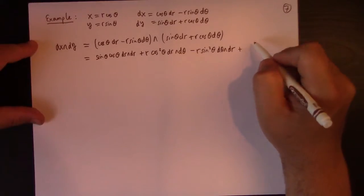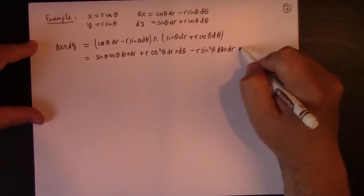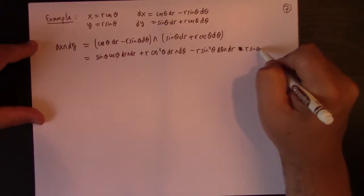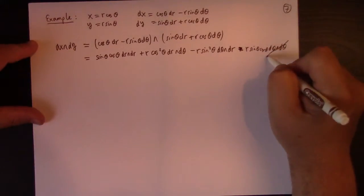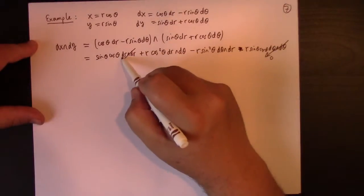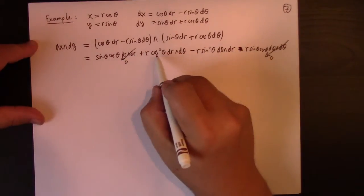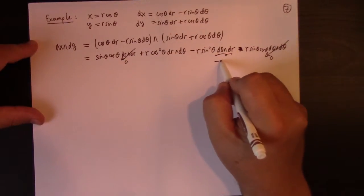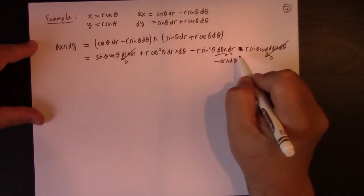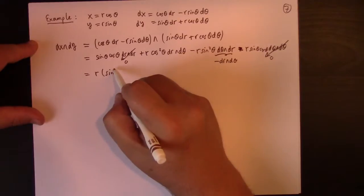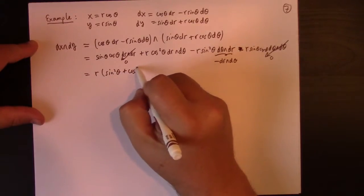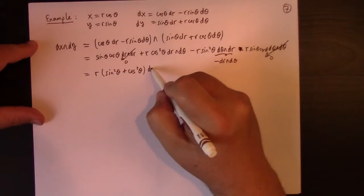And then plus R sine theta, cosine theta d theta wedged d theta. Of course, d theta wedged d theta is zero. dr wedged dr is zero. And, on the other hand, this is minus dr wedged d theta. So, these terms combine to give me R times sine squared theta plus cosine squared theta dr wedged d theta.